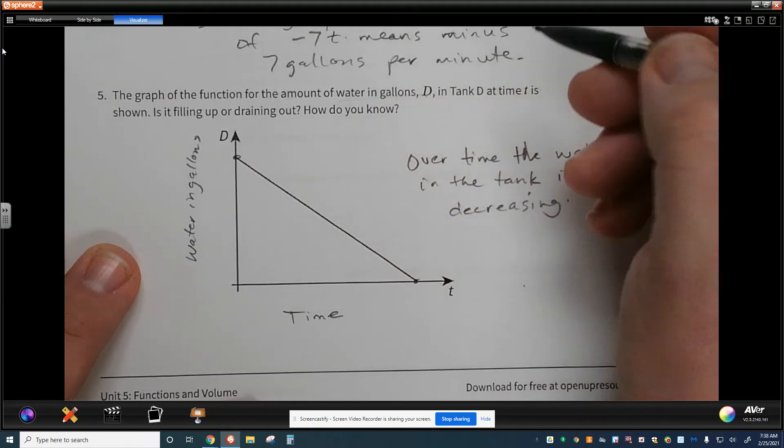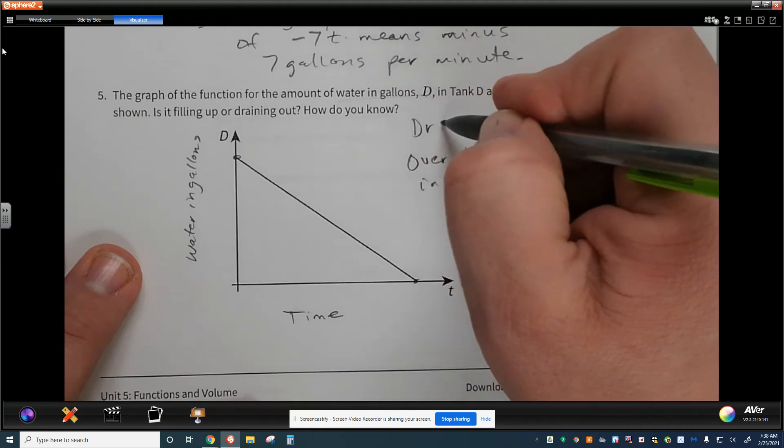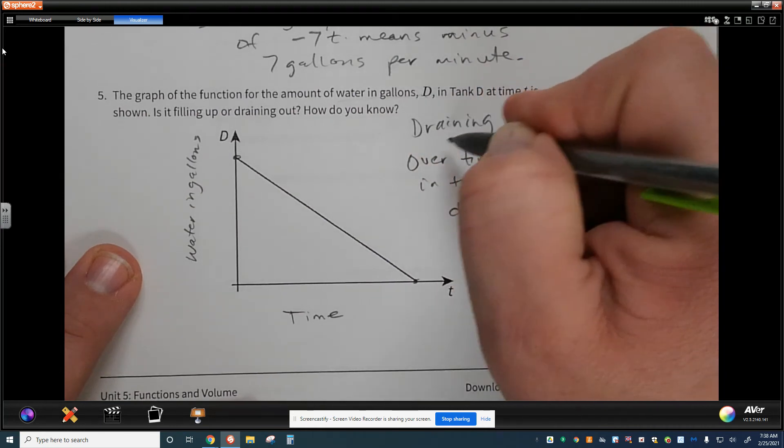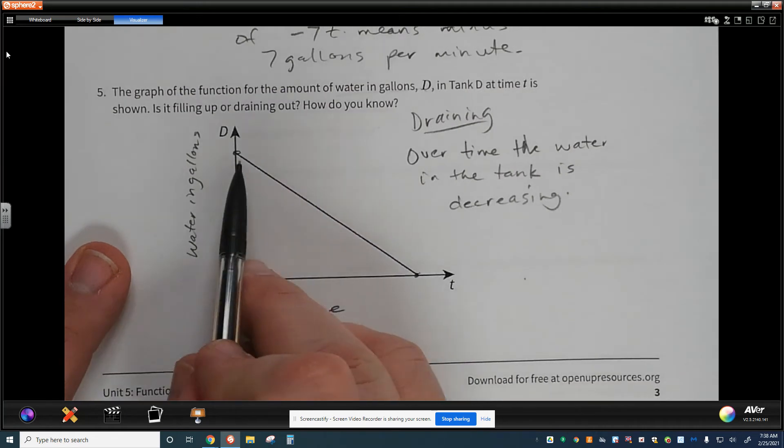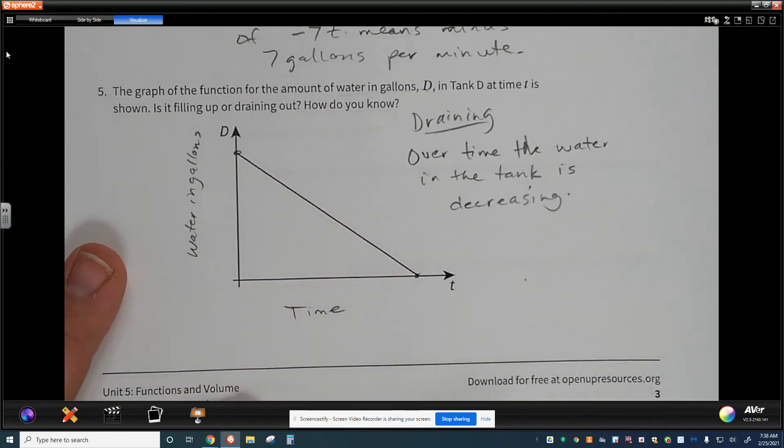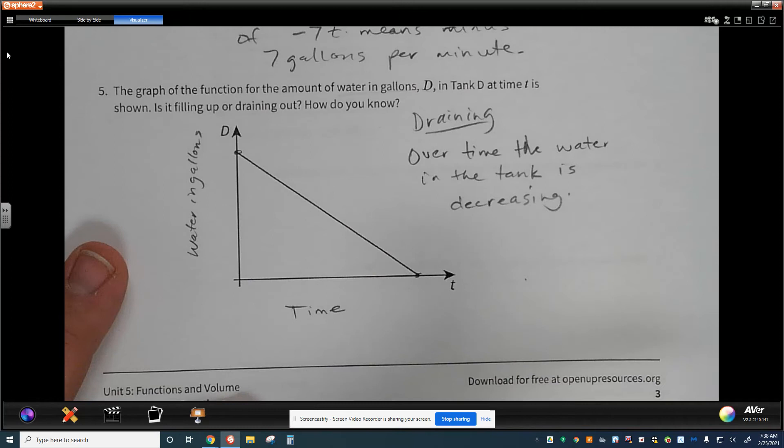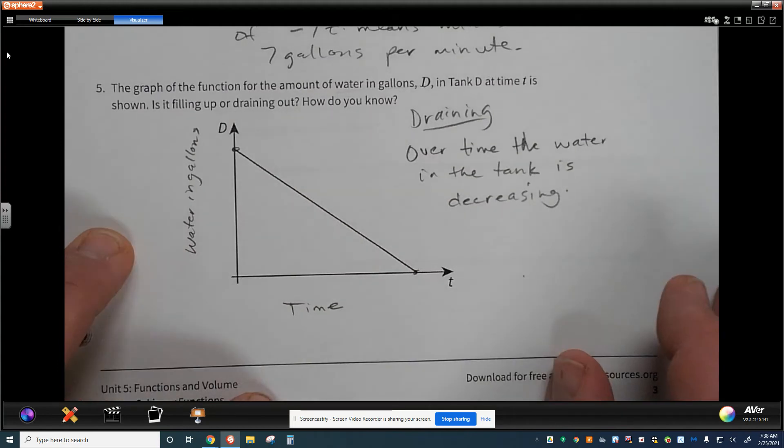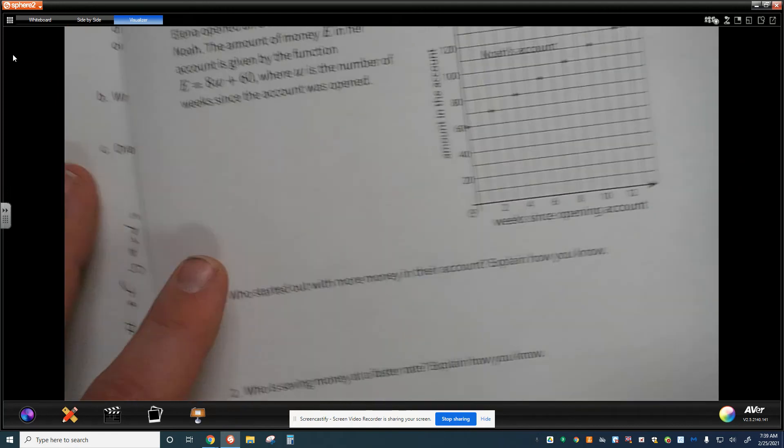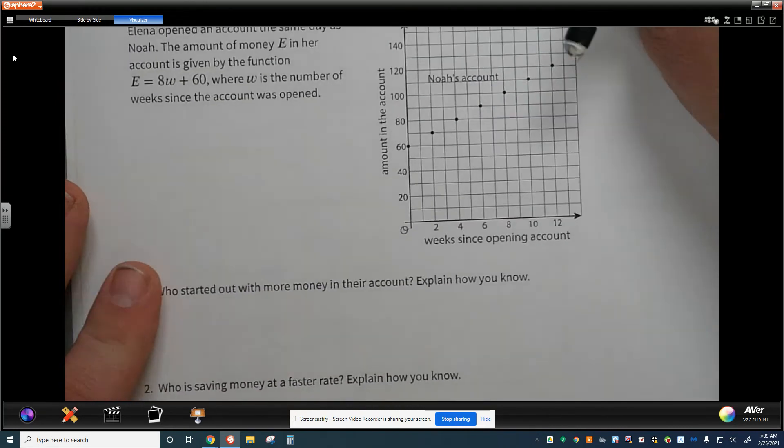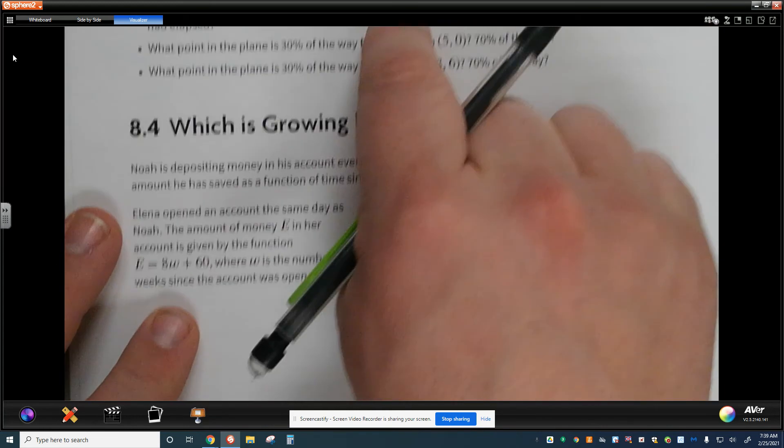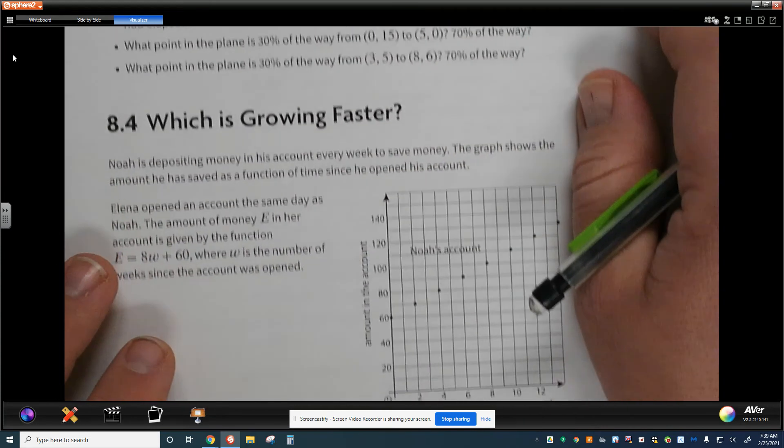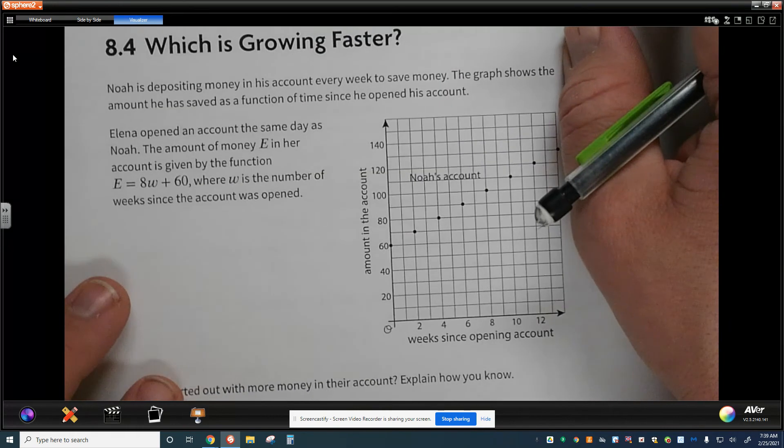And so what I see with this is that it is draining. And all because I see where it's at. But I have to be able to interpret that. And using a graph to be able to see that by understanding what my input or independent variable is compared to my output really helps to make sense of the situation. The last part that we're going to do is 8.4. You're welcome to go ahead and try the Are You Ready For More? I'm going to go ahead and pass it up. 8.4, which is growing faster.